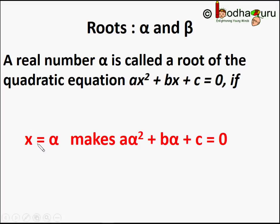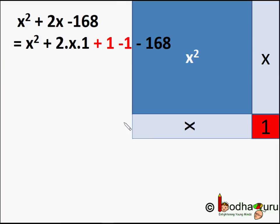So alpha will be the root of the equation ax² + bx + c = 0. If alpha satisfies the equation, it means if we put alpha in place of x — that is, a·alpha² + b·alpha + c — that should be equal to zero. From our last video we know the completing the square method for finding the roots of a quadratic equation.